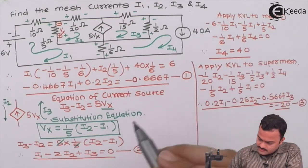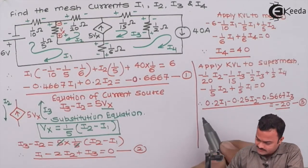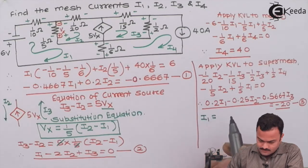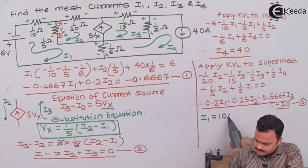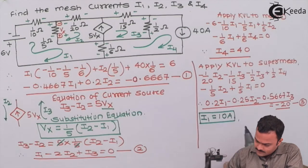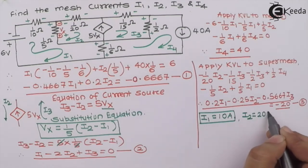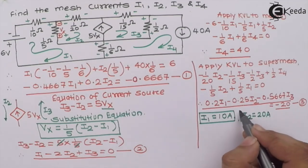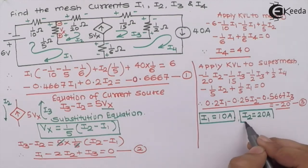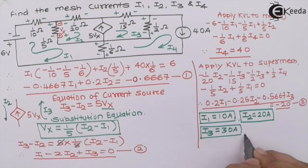After solving equations 1, 2, 3 we will get values of i1, i2, i3 as: i1 will be 10 ampere, i2 will be 20 ampere, i3 as 13 ampere, and needless to say i4 which is nothing but 40 only.